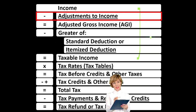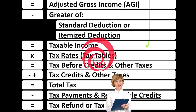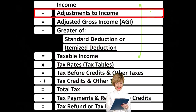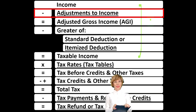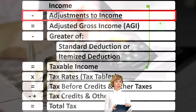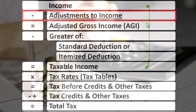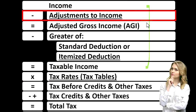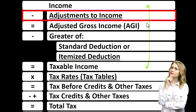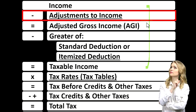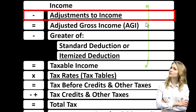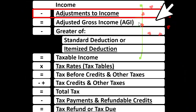Then we're going to deduct the standard deductions or the itemized deductions to get down to the taxable income. One of the reasons you might call it adjustments to income instead of a deduction is because it's leading to that subtotal of adjusted gross income. That subtotal is usually the number — as opposed to the top income number — used to do phase-outs. When we have phase-outs of deductions or phase-outs of credits, as people's income goes up, they phase out the benefits you might get for certain credits and deductions.